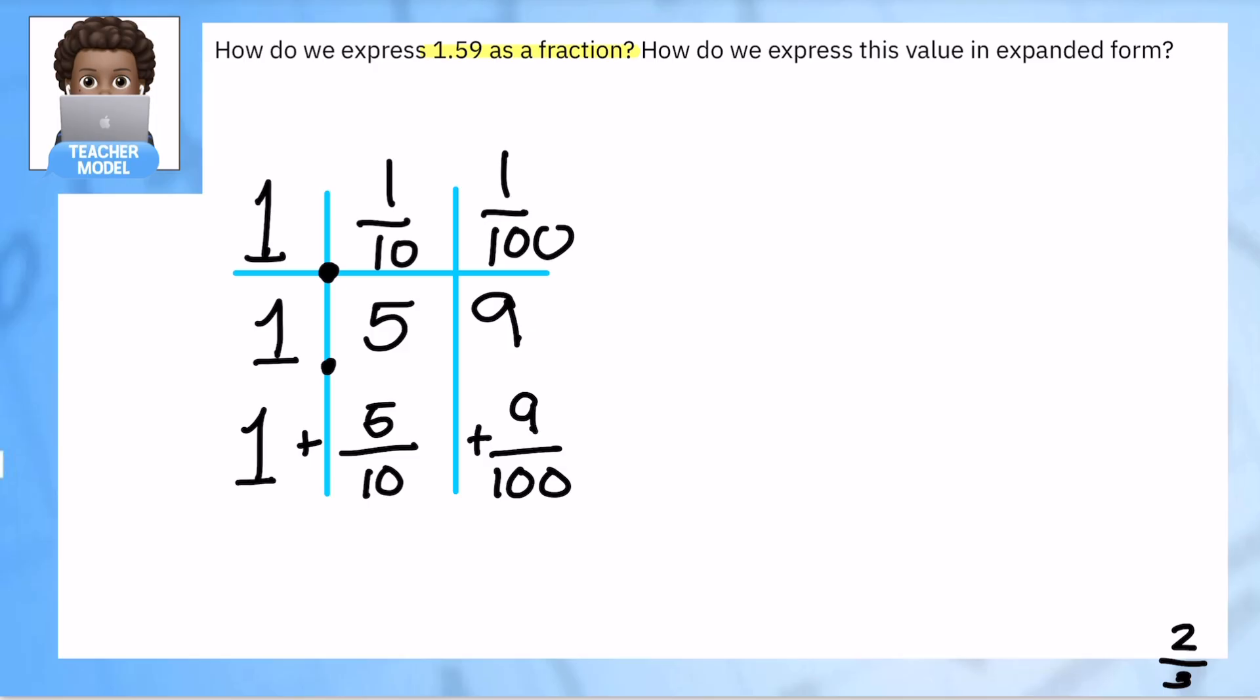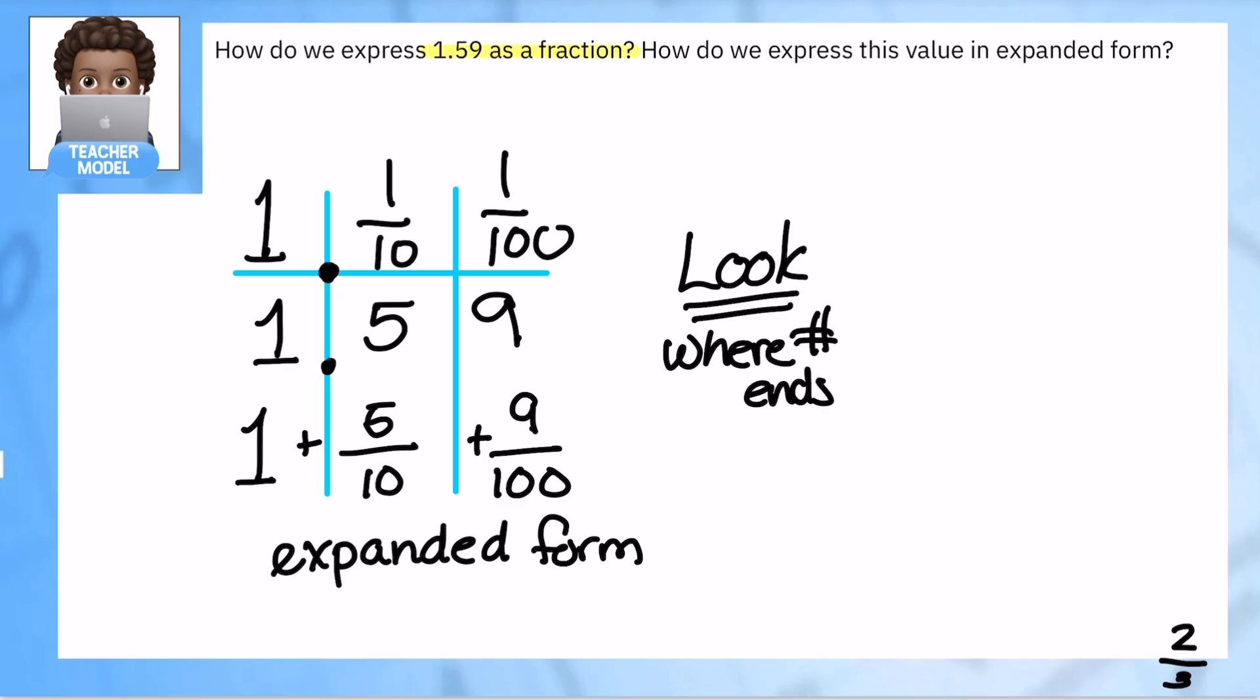So that's one way to express it in expanded form. Now to also write it as a fraction, what I could do is again we're gonna look to see where it ends, and our number ends over here in the hundreds place. So that means my denominator is gonna be hundreds, okay? And I know this is gonna be a mixed number because I have one and fifty nine.